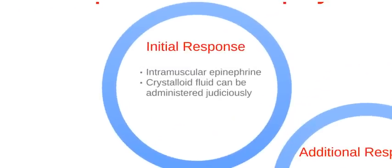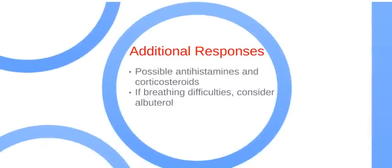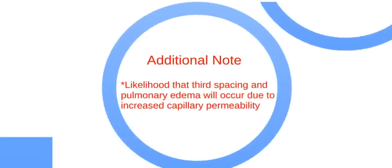In anaphylactic shock, initial treatment consists of administering intramuscular epinephrine. Also give IV crystalloid fluid judiciously. Possible antihistamines and corticosteroids are additional responses. If breathing difficulties are present, consider administering nebulized albuterol. Note it is likely that third spacing and pulmonary edema will occur due to increased capillary permeability.